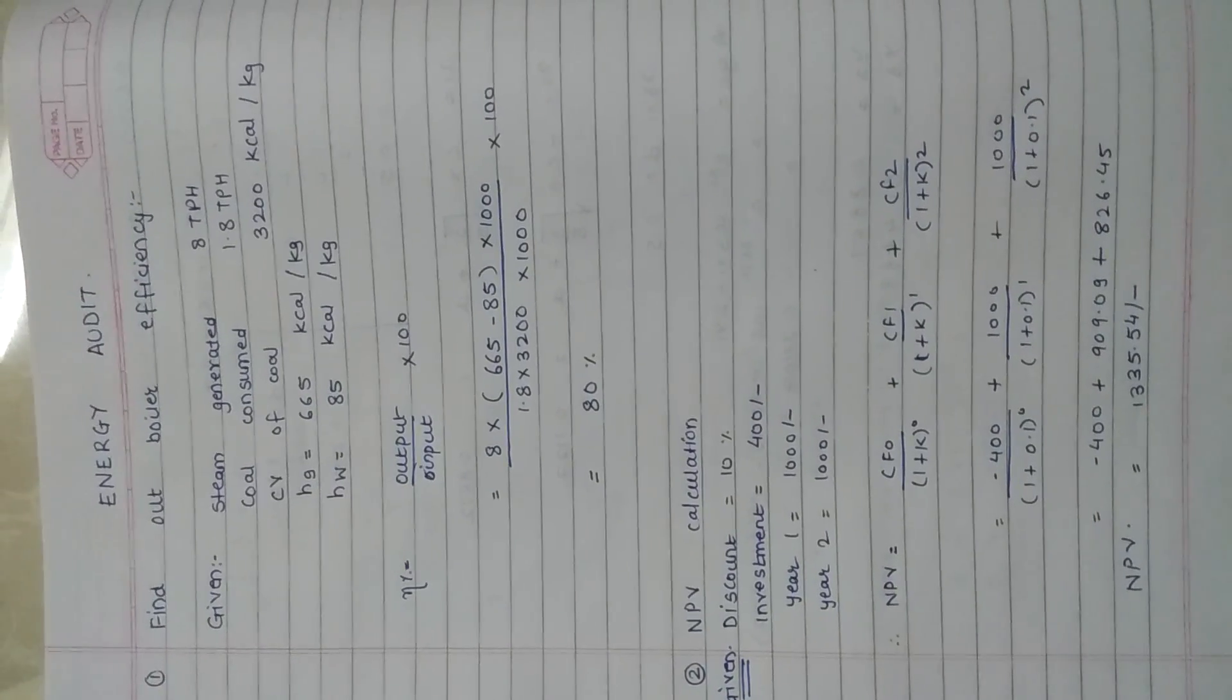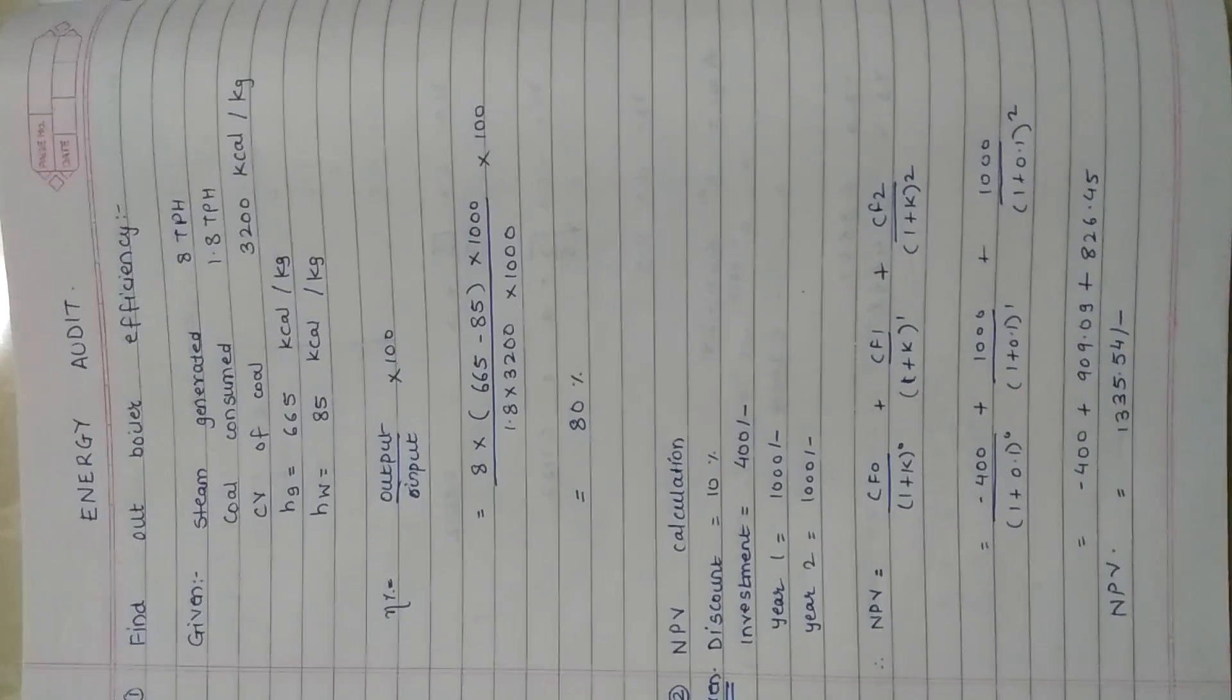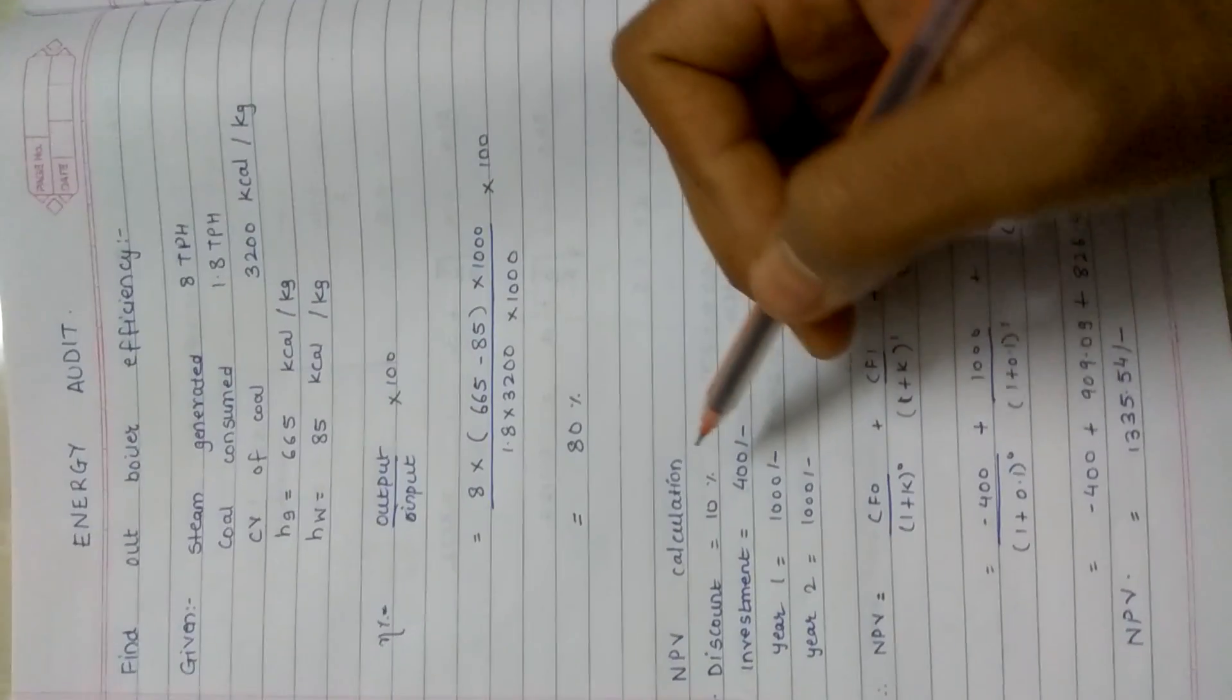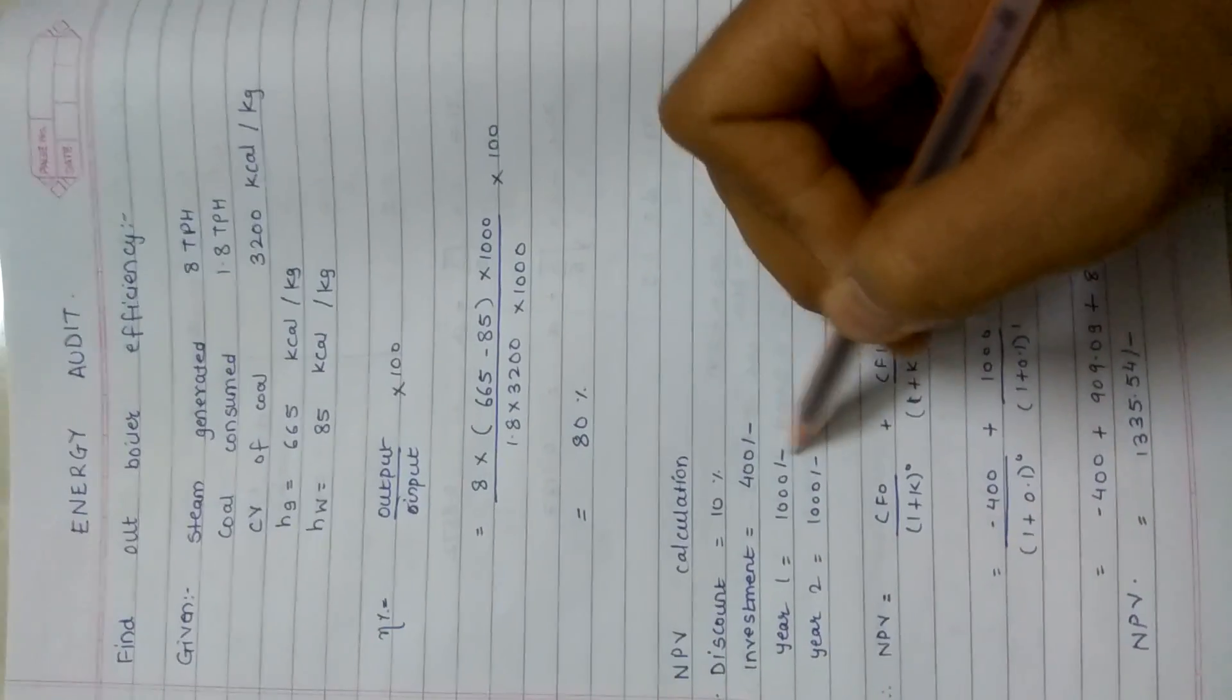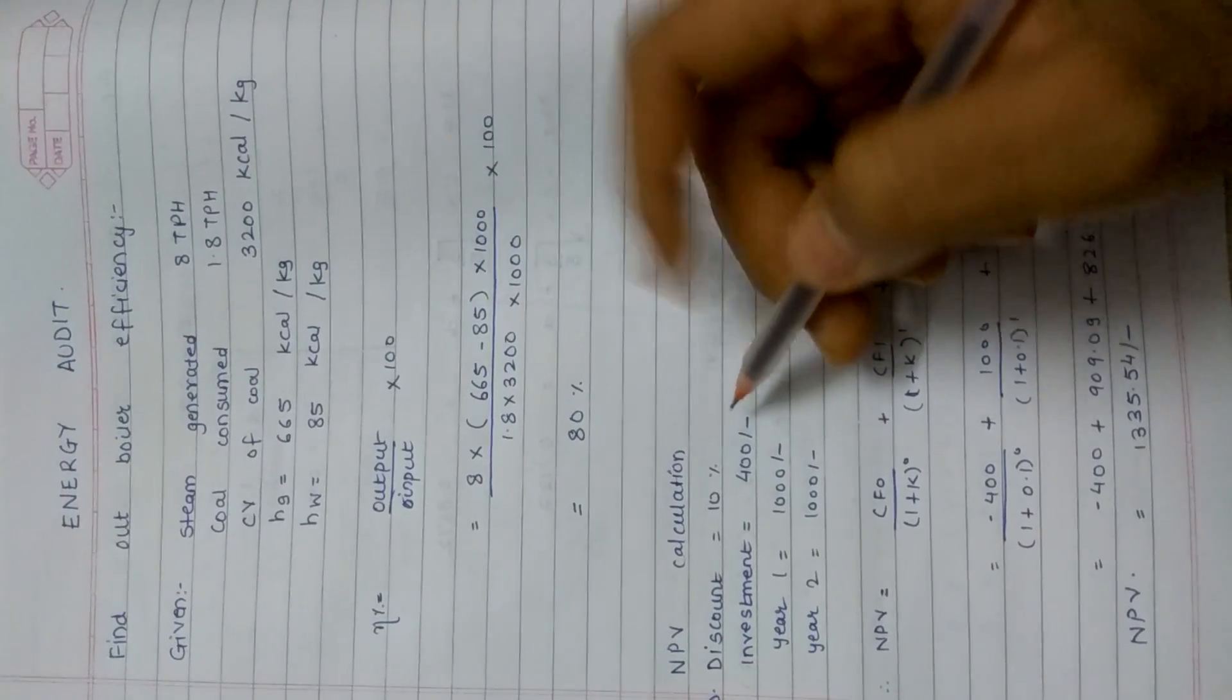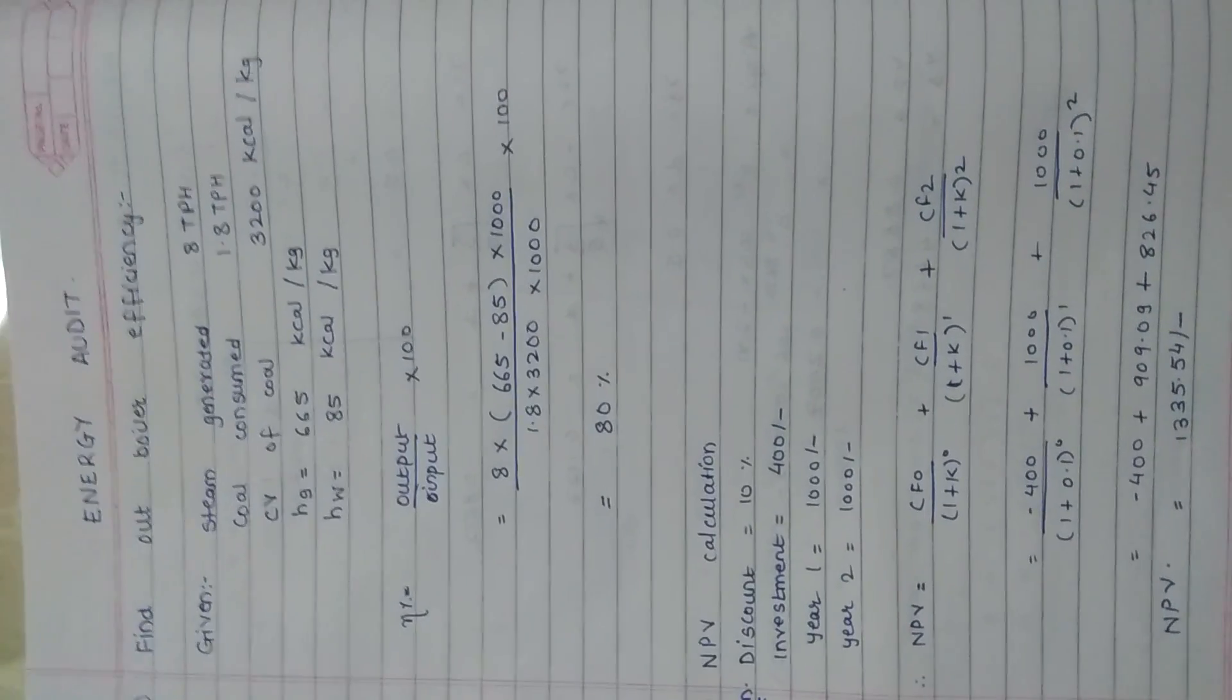In this numerical we are supposed to calculate NPV, that is net present value, of a particular system or object which you bought. We have been given a discount of 10%, our investment was 400 rupees, and we got 1000 rupees work done by the particular object or instrument we bought. We have to calculate net present value.